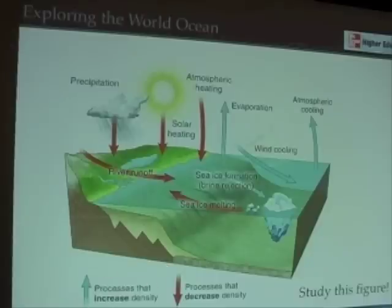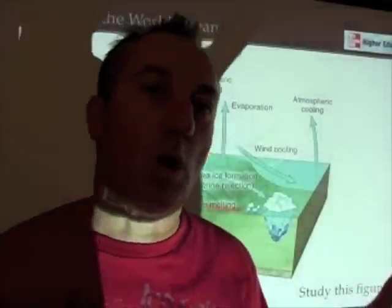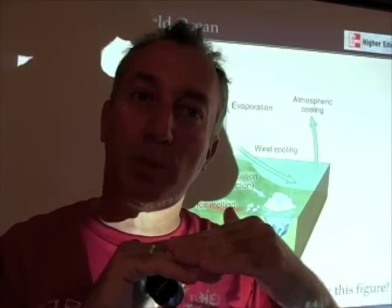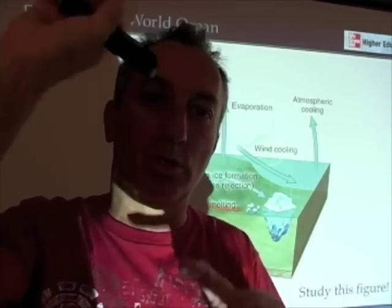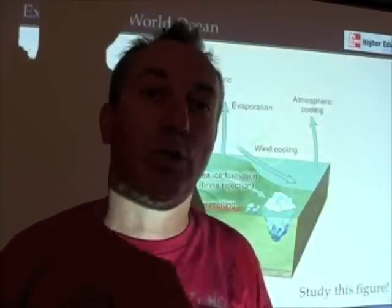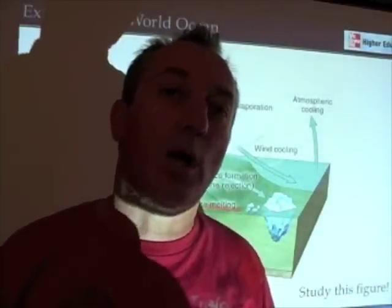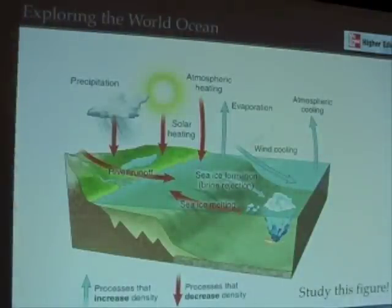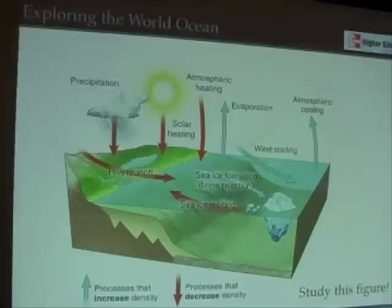Evaporation also increases density. The blue arrows in this figure represent processes that increase density. Why does evaporation increase the density of seawater? Because evaporation leaves salts behind — just like adding salts to a bottle of water. So it increases the density of those surface waters. A similar process happens when we form ice: as temperatures drop in polar regions and sea ice forms, it rejects those salts in a process called brine rejection, and in rejecting those salts, it increases the density of the seawater.